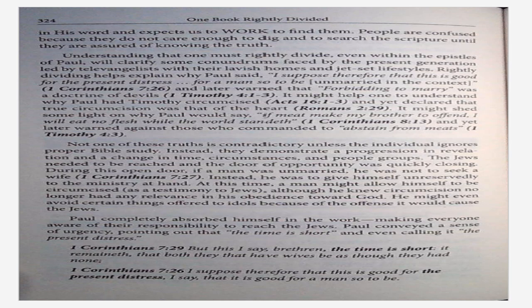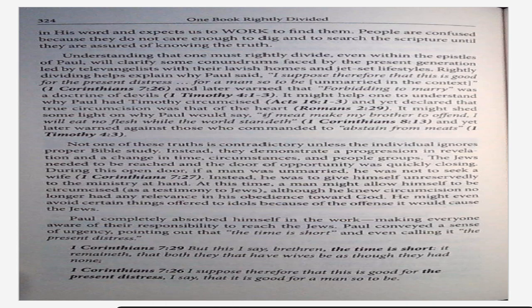Rightly dividing helps explain why Paul said, I suppose therefore this is good for the present distress — 1 Corinthians 7:26 — and later warned that forbidding to marry was a doctrine of devils — 1 Timothy 4:1-3. It might help one to understand why Paul had Timothy circumcised — Acts 16:1-3 — and yet declared that true circumcision was that of the heart — Romans 2:29. It might shed light on why Paul would say, if meat make my brother to offend, I will eat no flesh while the world standeth — 1 Corinthians 8:13 — and yet later warned against those who commanded to abstain from meats — 1 Timothy 4:3. These truths seem contradictory unless the individual ignores proper Bible study. Instead, they demonstrate a progression in revelation and a change in time, circumstances, and people groups.